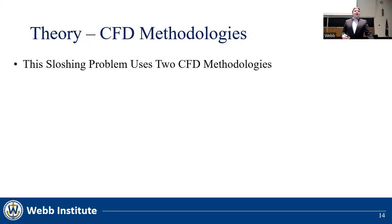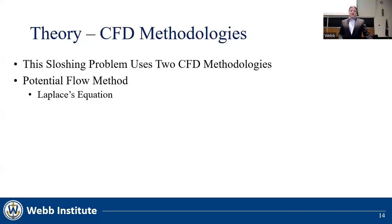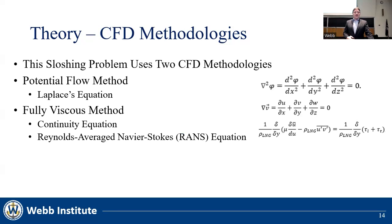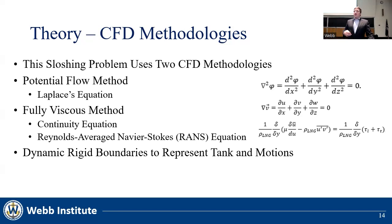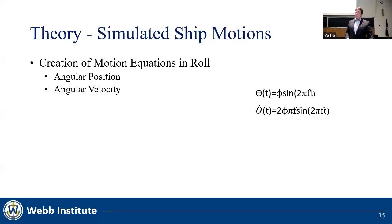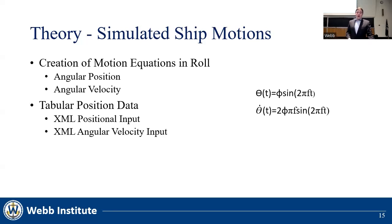For this sloshing problem, two CFD methodologies were used: the potential flow method, which utilizes Laplace's equation, and a fully viscous method, which utilizes the continuity equation and the Reynolds-Averaged Navier-Stokes (RANS) equation. Dynamic rigid boundaries were used to represent the tank and impart motions onto the fluid. These boundary conditions represent ship motions using harmonic equations to find angular position and velocity, where phi is the max amplitude, f is the frequency, and t is the time step. These data points were calculated for each time step and input into XML files to be read into the CFD program.